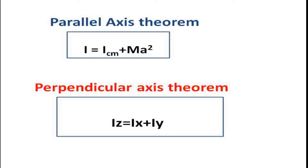Next is the perpendicular axis theorem. It states that the moment of inertia of a plane lamina about an axis perpendicular to its plane is equal to the sum of the moments of inertia of the lamina about two axes at right angles to each other in the plane of the lamina. That is, I_z is equal to I_x plus I_y.